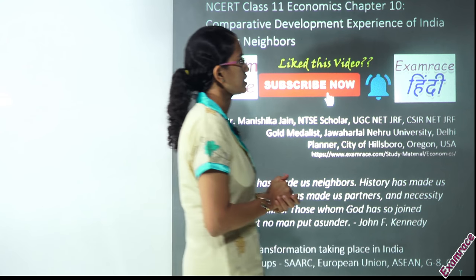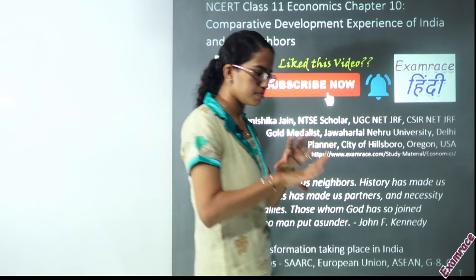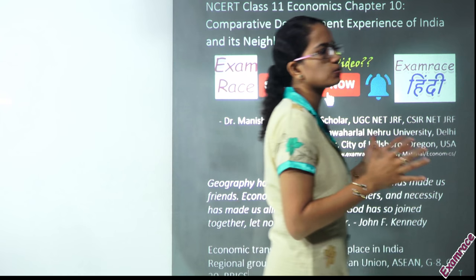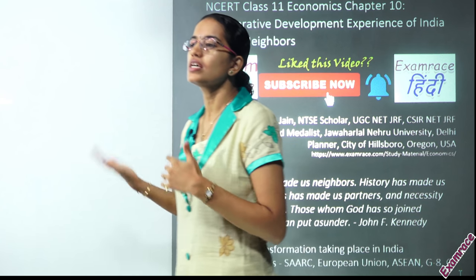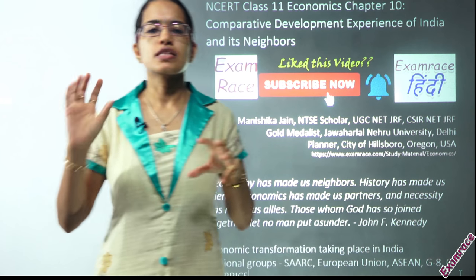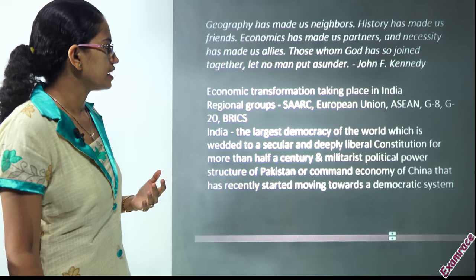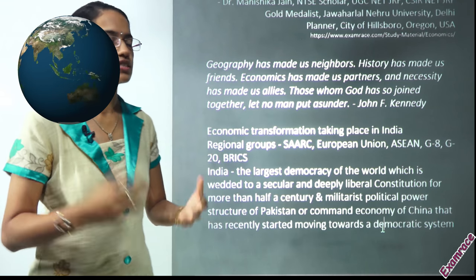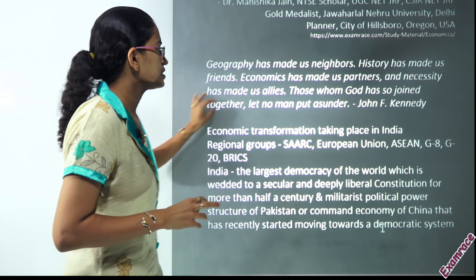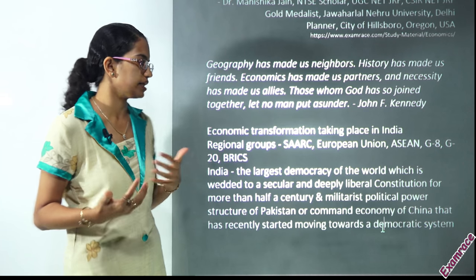Welcome. We'll start with the final chapter for Class 11th Economics. In this chapter, we'll talk about the comparative developments of India, Pakistan, and China. We are talking about the neighbours of India. All three nations more or less got independent close by. However, the development pace was slow till the 1970s. Post-1970s, we saw changes in the three nations. John F. Kennedy laid down an interesting definition: geography made us neighbours, history made us friends, economics made us partners, and necessity made us allies.